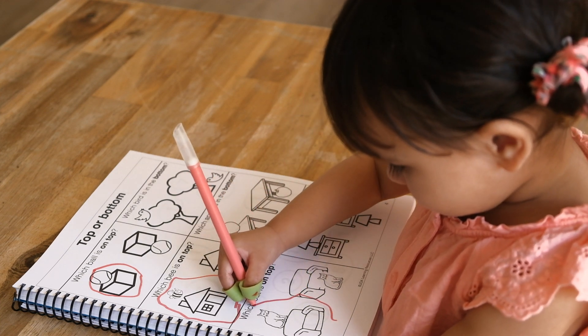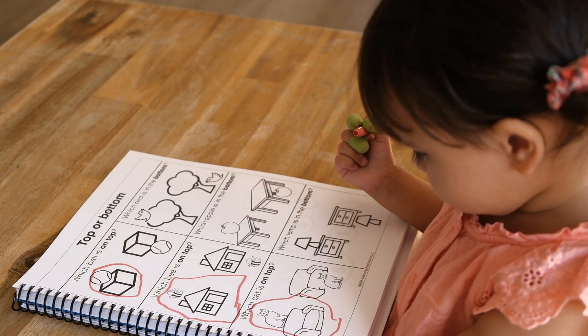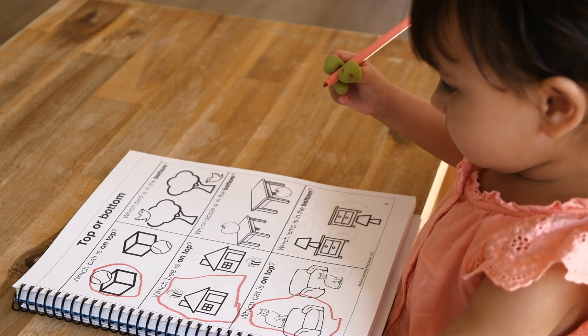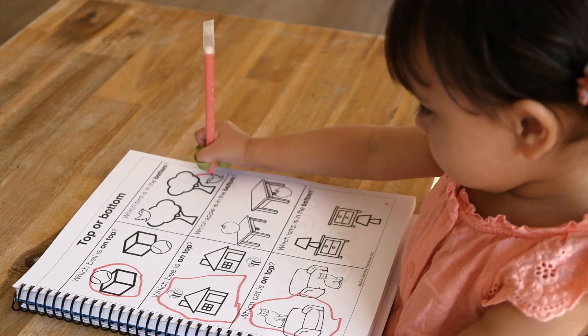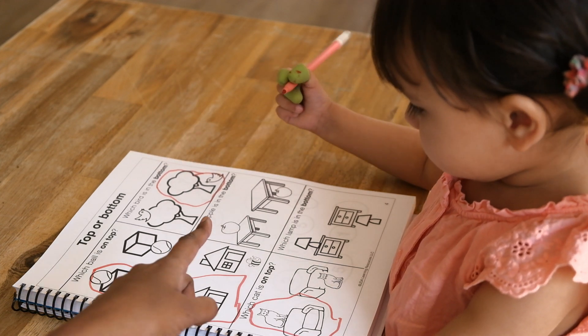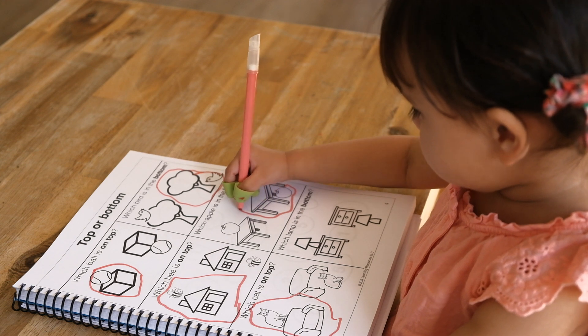Which cat is on top? This cat. That's right. Which bird is on top of the box? That's right. Which apple is on top of the box? Here. That's right.